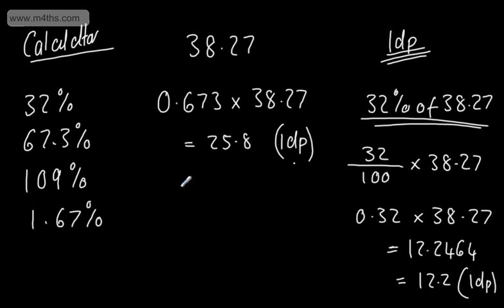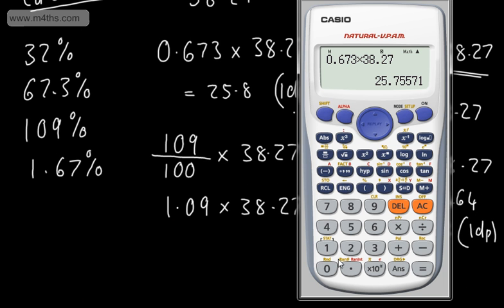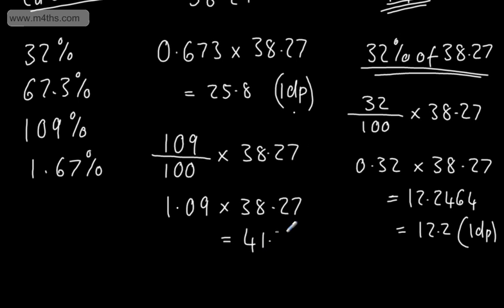For 109%, I write this as 109/100 or the decimal 1.09. Multiplying 1.09 × 38.27 gives 41.7143, which rounds to 41.7 to 1 decimal place.